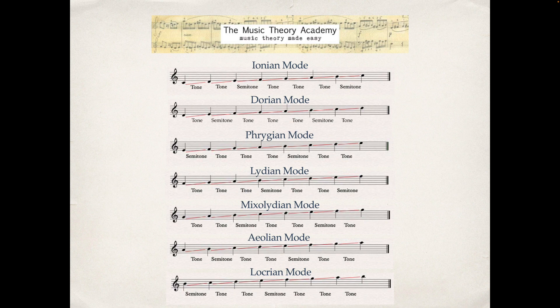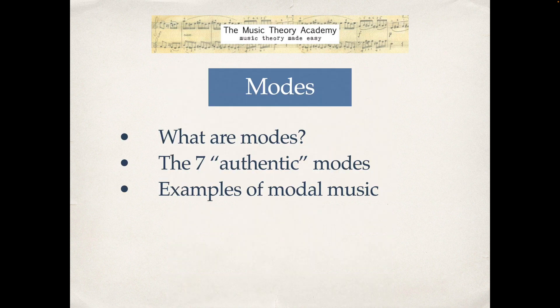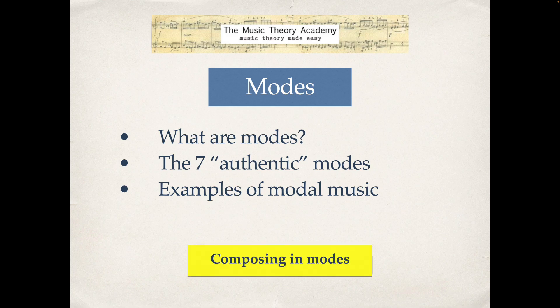So those are the seven authentic modes. To summarize: we've looked at what modes are and the fact that they came before major and minor scales, we've had a look at the seven authentic modes, and you've got a few examples of modal music. As promised, in the next video I'm going to look at composing in modes — hope you find that helpful!